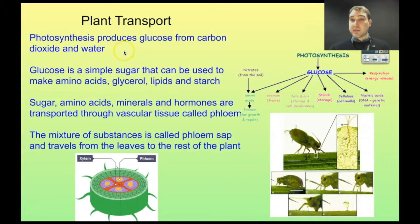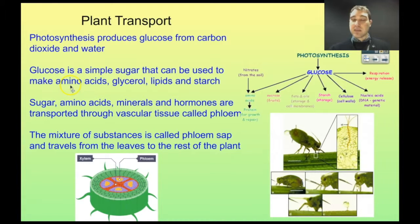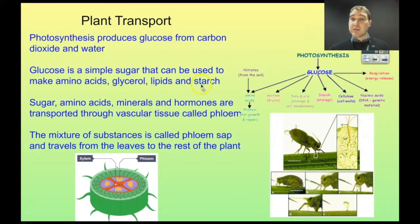We've talked about photosynthesis before. This is where glucose is made from carbon dioxide and water, and oxygen is released as a byproduct. Glucose is an energy storage molecule. But glucose can also be modified by chemical reactions in the plant to make amino acids, which are used to make proteins; glycerol, which is a component of fats and oils; lipids, which are fats and oils; and also starch, which is a large energy storage molecule made up of lots of glucoses joined together.